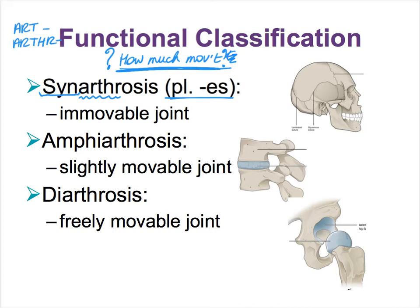We have the freely movable joints that we call diarthrosis. For instance, the head of the femur fits nicely into the socket of our hip bone — that's a freely movable joint. Most of our joints are freely movable: when you're moving your head, wrists, fingers, legs, arms, and trunk, all of those joints are diarthrotic joints. We can use the adjective form, diarthrotic, rather than calling them diarthrosis.